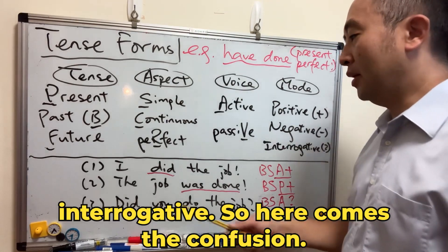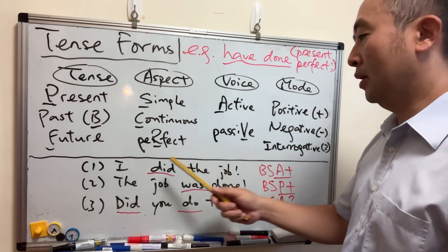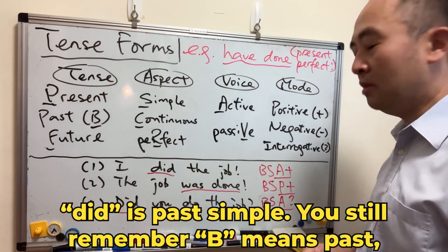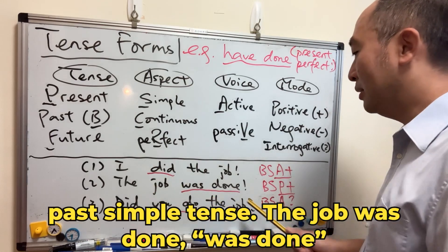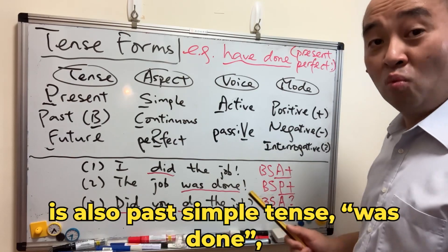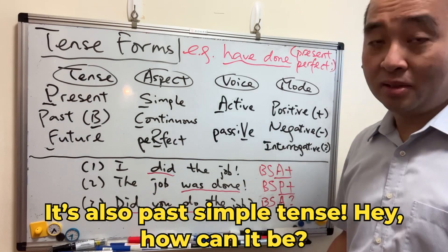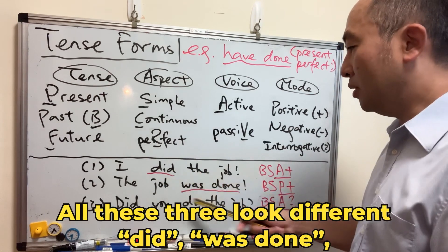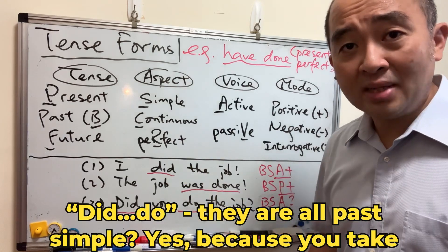So here comes the confusion. If you say 'I did the job,' 'did' is past simple — B means past. 'The job was done' is also past simple. And 'Did you do the job?' is also past simple. How can it be? All three look different: 'did,' 'was done,' 'did do' — they are all past simple?